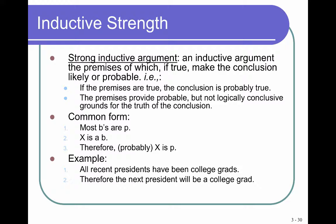A strong inductive argument is one in which the premises, if true, make the conclusion likely or probable. The premises provide probable but not conclusive grounds for the truth of the conclusion. Here's a common inductive form: most B's are P, X is a B, therefore probably X is a P. For example: all recent presidents have been college grads, therefore the next president will be a college grad. The arguer gives information in the premise that leads to a prediction. Since it's unlikely we would elect someone with only a high school degree to the presidency, this is a fairly strong argument.